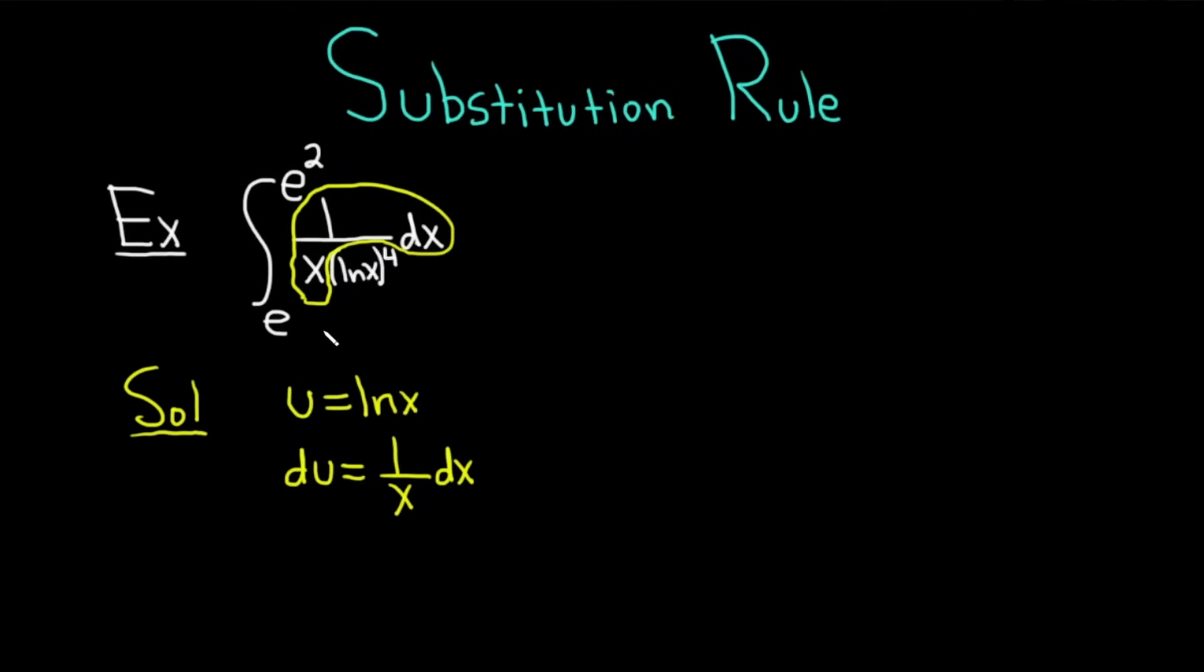Because this is a definite integral, and we made a u substitution, we have to change the limits of integration. So let me show you how to do that. So you just do one at a time. So when x is e, what you do is you take your x value and you plug it into your formula for u. The u is equal to the natural log of e, which is equal to 1. So u is equal to 1. So when x is e, u is equal to 1.